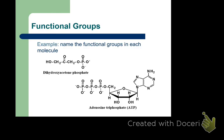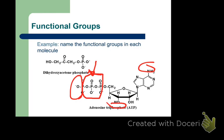Looking at ATP: one functional group is the phosphate or phosphoryl, and you can call the connected phosphates a phosphoryl anhydride. There are at least three more: the amine, the alcohol, and the ether. The ether (R-O-R) is the one people often overlook.